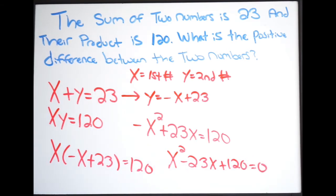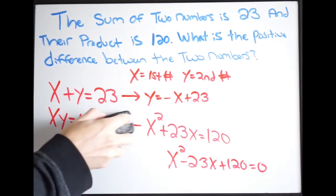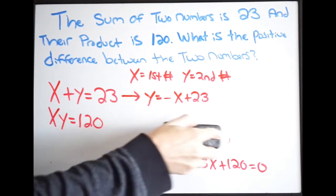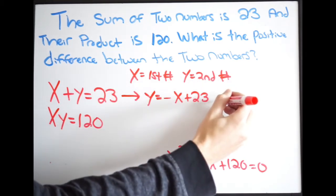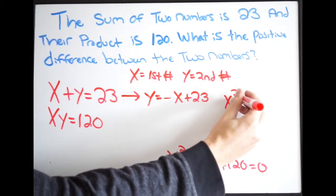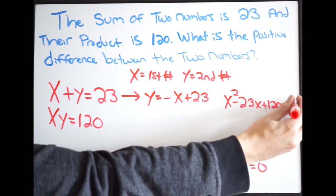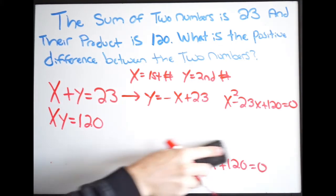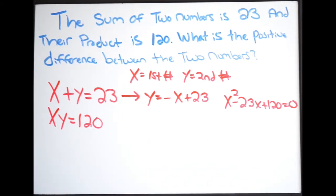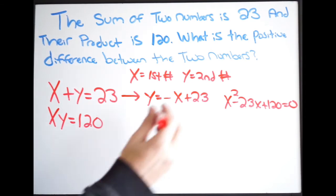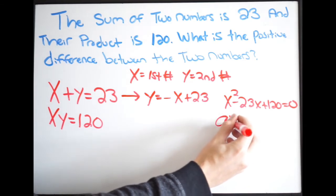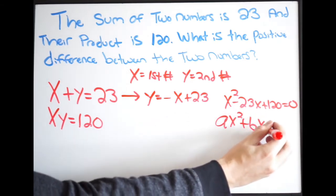So at this point we can try to factor. I'm just going to go ahead and just erase some of this work so we have room. So I'm just erasing this here and this. And we'll just write it right up here. So we have x squared minus 23x plus 120 is going to be equal to zero. And now we know that we can use the AC method here.